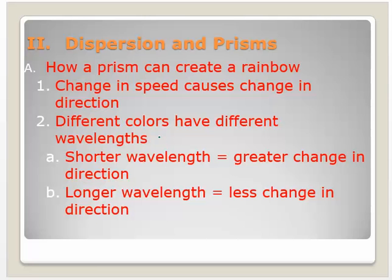Shorter wavelengths would be examples like blues and purples. Longer wavelengths would be like infrared. Infrared has a longer wavelength. This would be reds and oranges. These are going to have less change in direction.